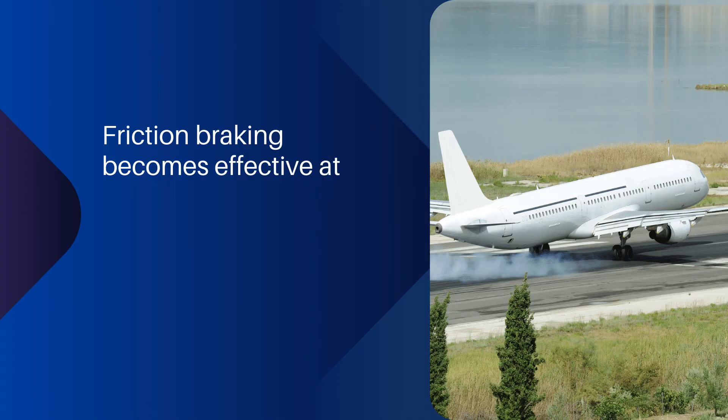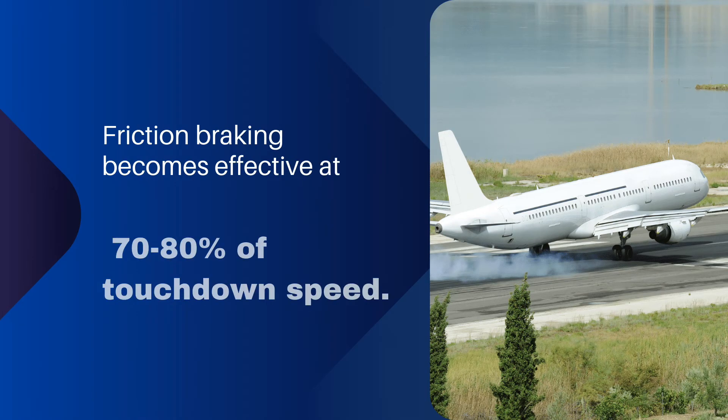Friction braking becomes effective at 70 to 80% of touchdown speed.